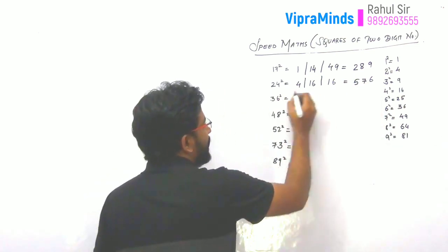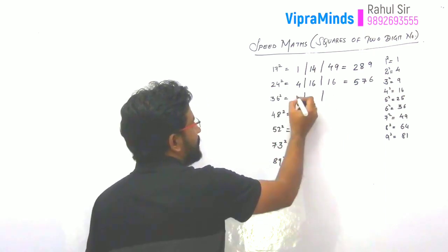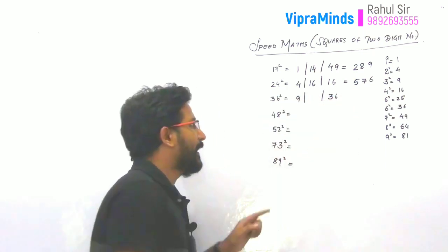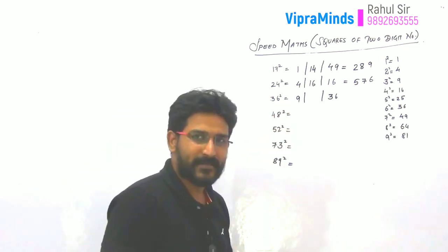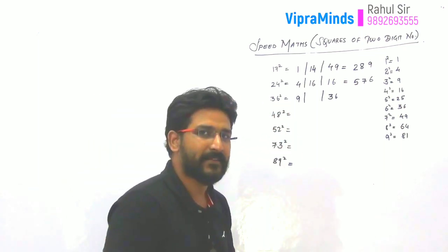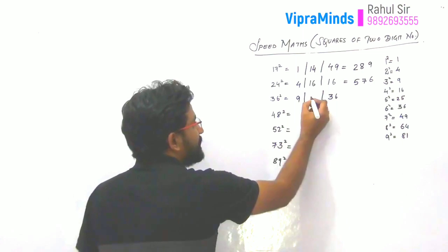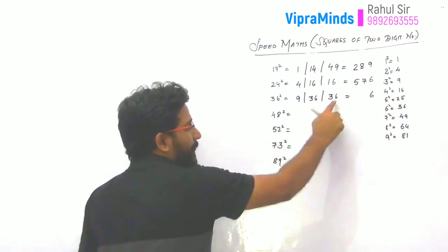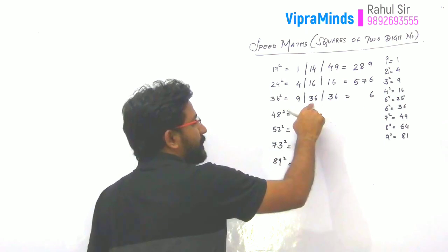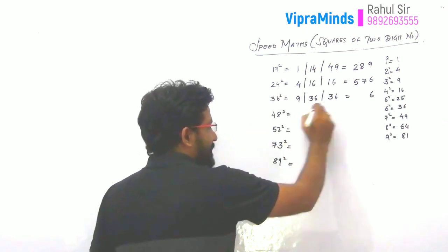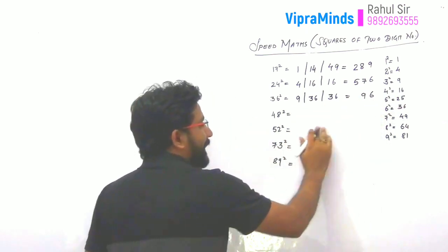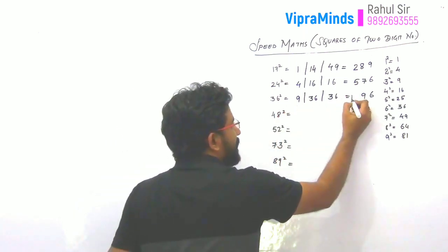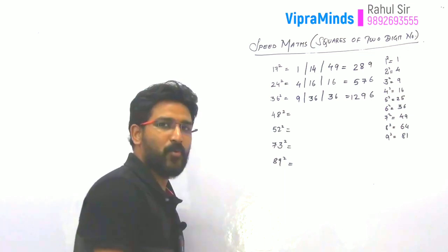Next example is 36 squared. 3 squared is 9. 6 squared is 36. Then 3 into 6 is 18, and the double of 18 is 36. Write 6 as it is and carry forward 3. So 36 plus 3 is 39 — write 9 and carry forward 3. So 9 plus 3 is 12. Your answer will be 1296.